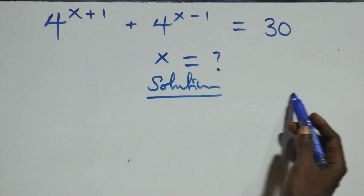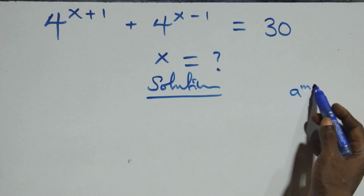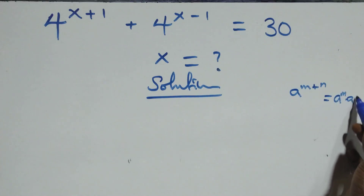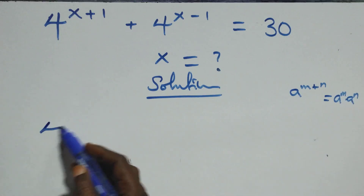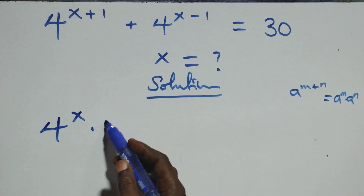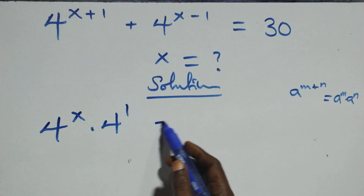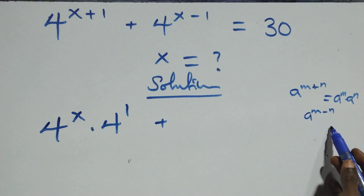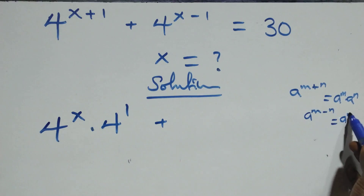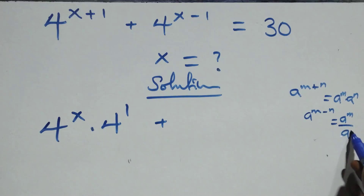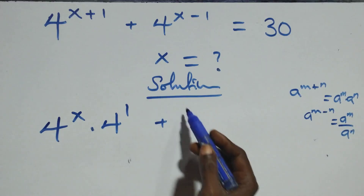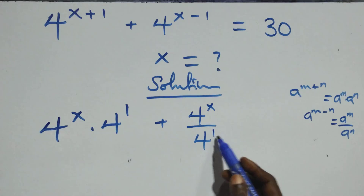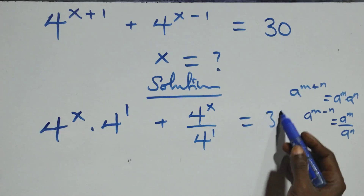What we have here: a^(n+n) is the same thing as a^n times a^n. So here we have 4^(x+1) equals 4^x times 4^1, and also a^(n−n) is the same as a^n divided by a^n. We can write 4^(x−1) as 4^x over 4^1, and this all equals 30 on the right side.